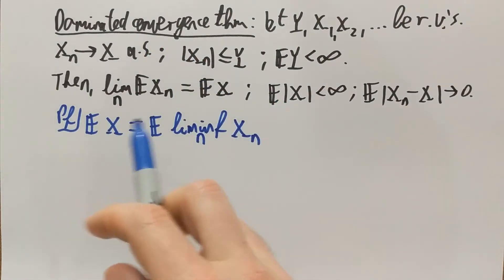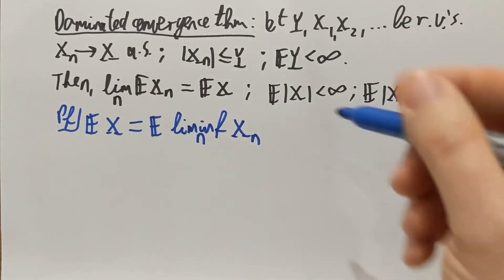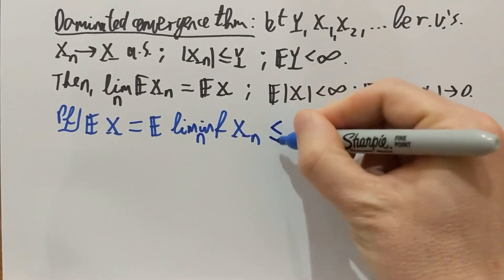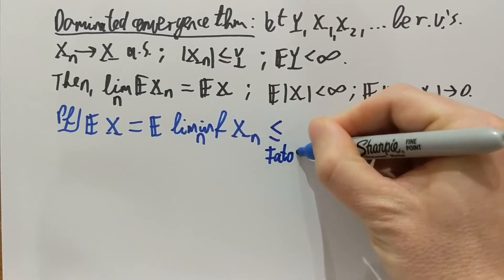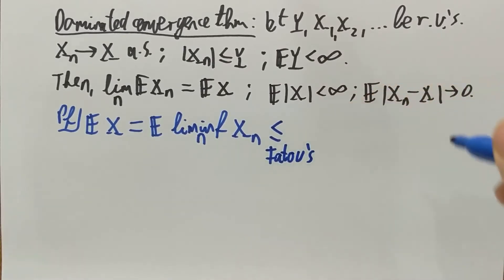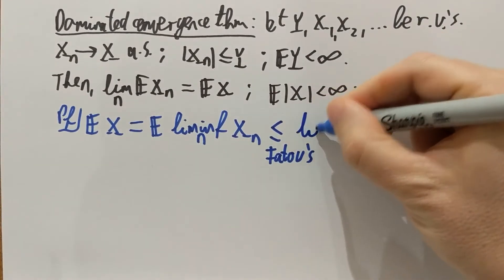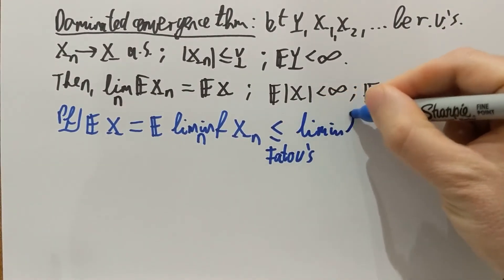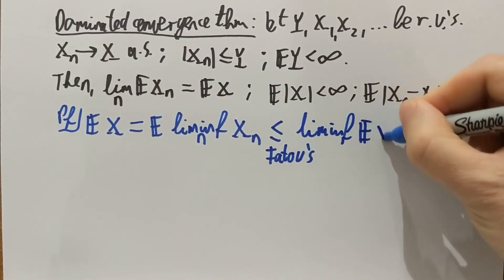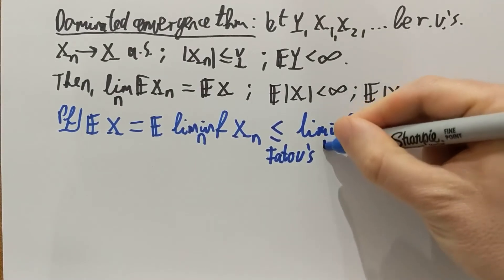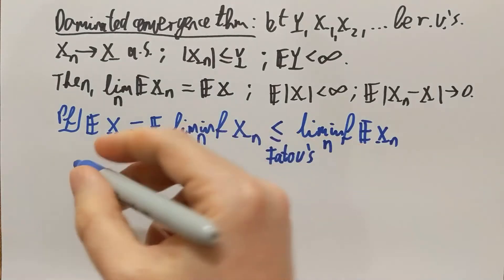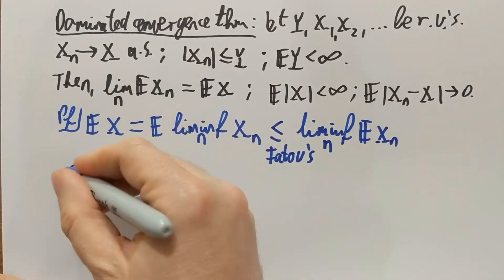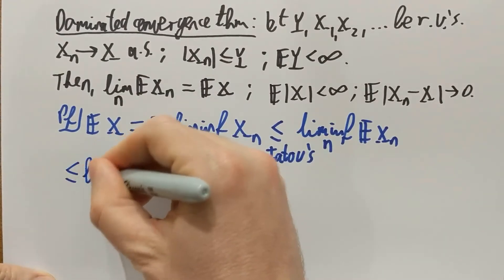So the expectation of this limit is the same as the expectation of the limit inferior. Here comes the previous statement — Fatou's Lemma — which tells me that the expectation of the limit inferior is always less than or equal to the limit inferior of the expectations. Now, for any sequence of numbers, the limit inferior is less than or equal to the limit superior.